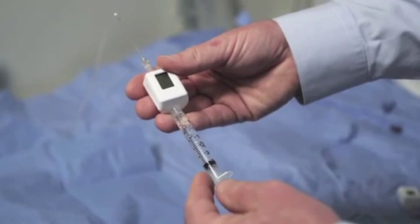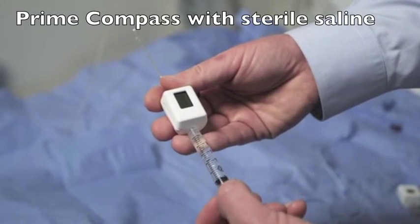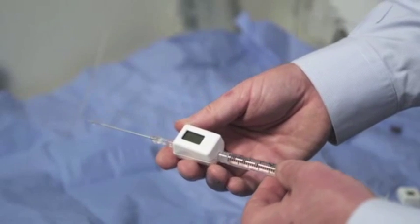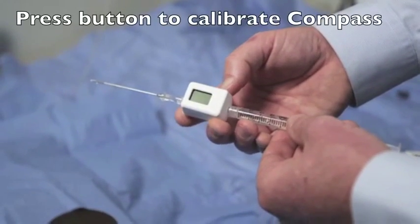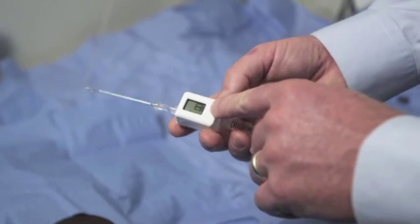Once the saline-filled syringe and needle are attached, prime the device with saline. Then, holding the device in the horizontal plane, depress the red button on the side and hold it until the device powers on and reads zero millimeters of mercury.